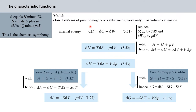According to the first law, equation 351 gives DU equals delta Q plus delta W. The heat exchange and work are performed reversibly. If we replace delta Q reversible by TDS and delta W reversible by the reversible volume work minus PDV, we get equation 352 — this is a direct substitution.